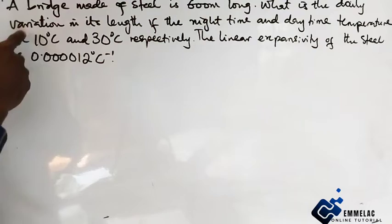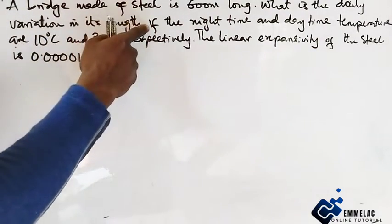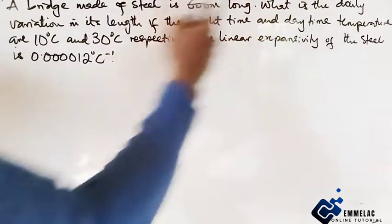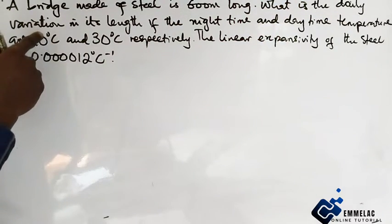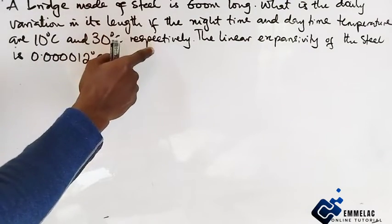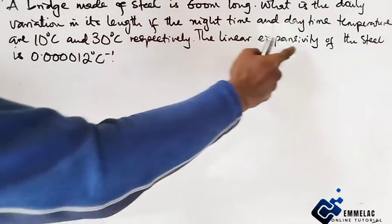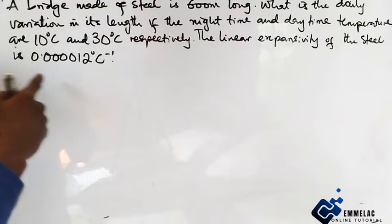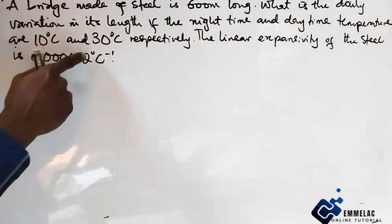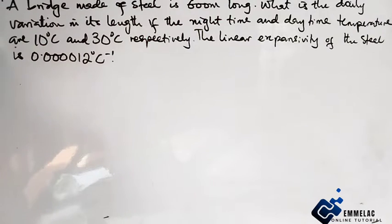is the daily variation in its length if the nighttime and daytime temperatures are 10°C and 30°C respectively? The linear expansivity of the steel is 0.000012 per degree centigrade.